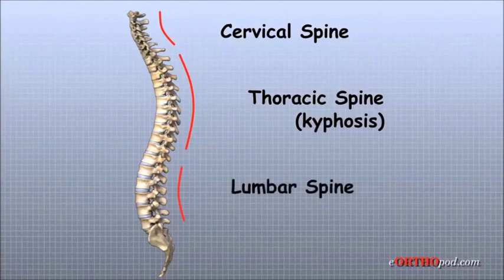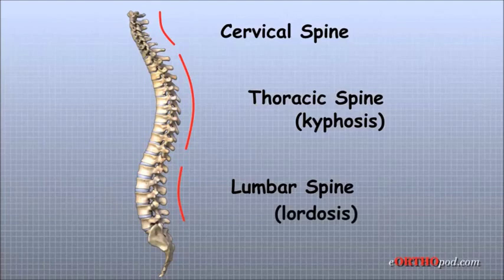The low back, also called the lumbar spine, curves slightly inward. An inward curve of the spine is called lordosis.